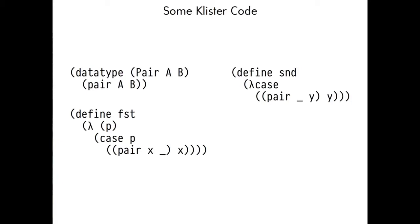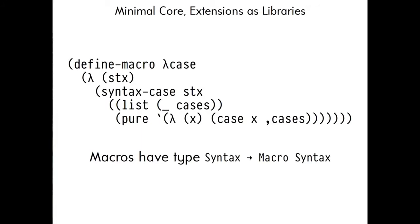On the other hand, unlike those languages, adding this feature to Clista did not require changing the compiler. It's just a library. Here's what that library looks like. We can define macro lambda case, and then we provide a function which transforms a piece of syntax into a new piece of syntax. And it does so in a monadic context, which is why there's a little bit more decoration there than you may be expecting.